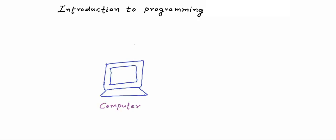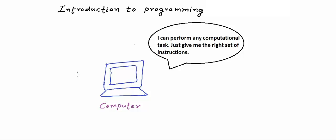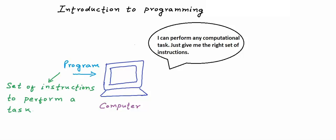Let's get started. Unlike most other machines that can perform a finite set of predefined tasks, a computer is a general purpose machine that can perform any computational task. All you need to do is give it a program, which is nothing but a set of instructions to perform a task. A computer is nothing in itself without programs. All the tasks are performed through programs. A modern day computer would have hundreds and thousands of programs in it.